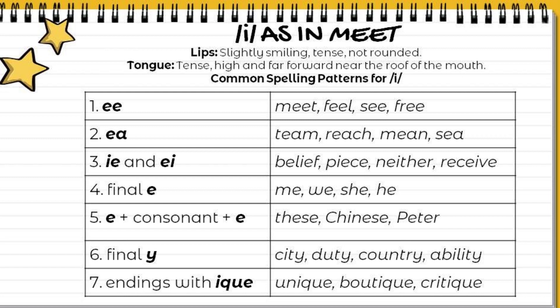E as in meat. The lips are slightly smiling, tense, and not rounded. And the tongue is tense, it is high and far forward near the roof of the mouth.